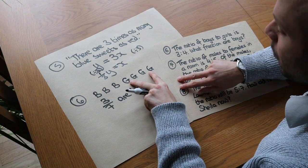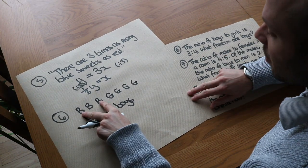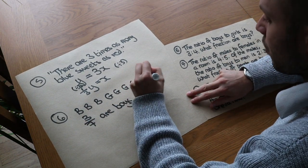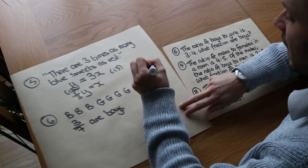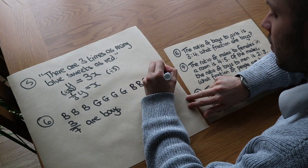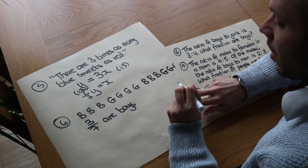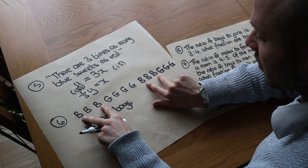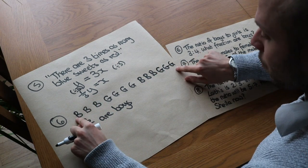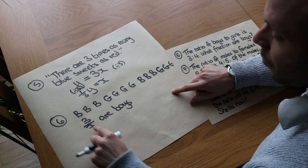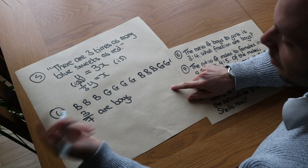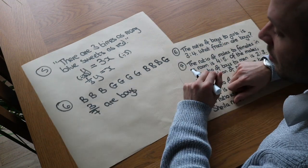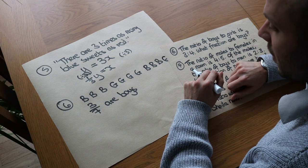You might think: what if there are more boys and more girls? Well, for each 3 boys there are 4 girls, so if we added another 3 boys we would have to add another 4 girls. But the fraction of boys is still the same — we have 6 boys out of 14 children, and 6 over 14 is the same as 3 over 7. So it's still going to be the same proportion.